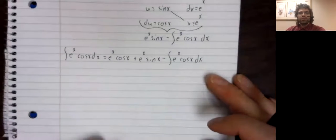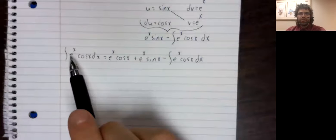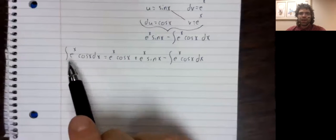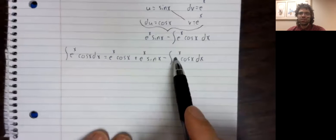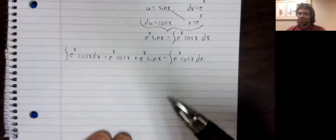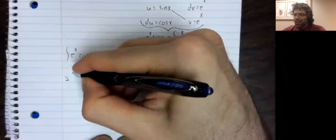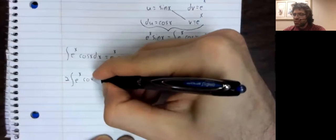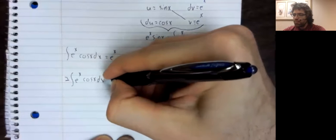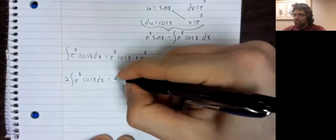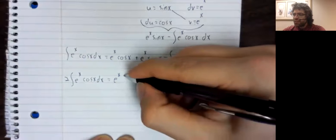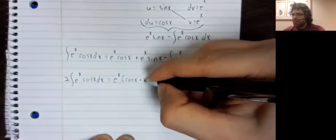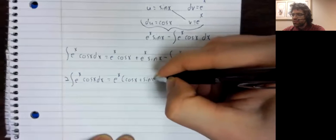And what we are going to do is we are going to solve for this integral as if we were back in college algebra. We'll add this to both sides. And we find that two times this integral is e to the x times the cosine plus the sine.